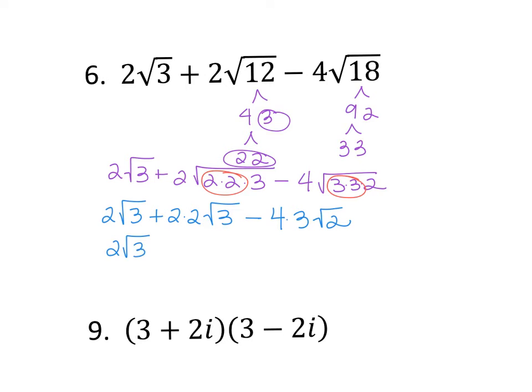Now let's just simplify. 2√3 is still the same, but 2 times 2 is 4√3, and then 4 times 3 is 12, and I still have my √2. I see that these are the same like radicals, so I can add them. So I get 6√3 minus 12√2. And that is my final answer.